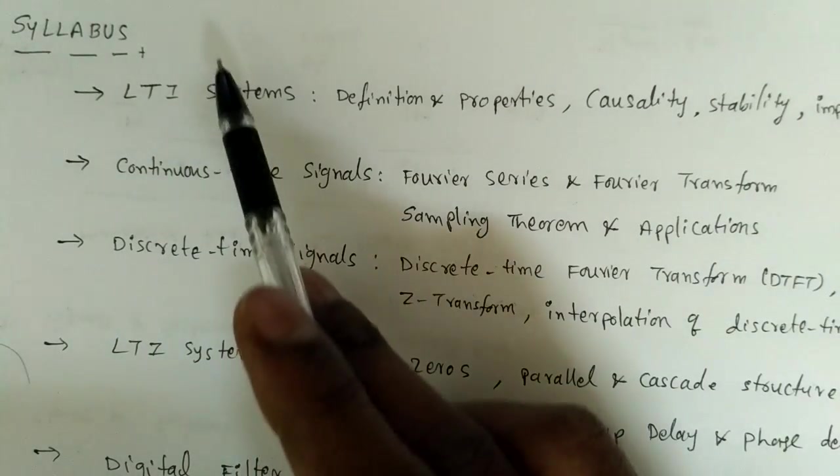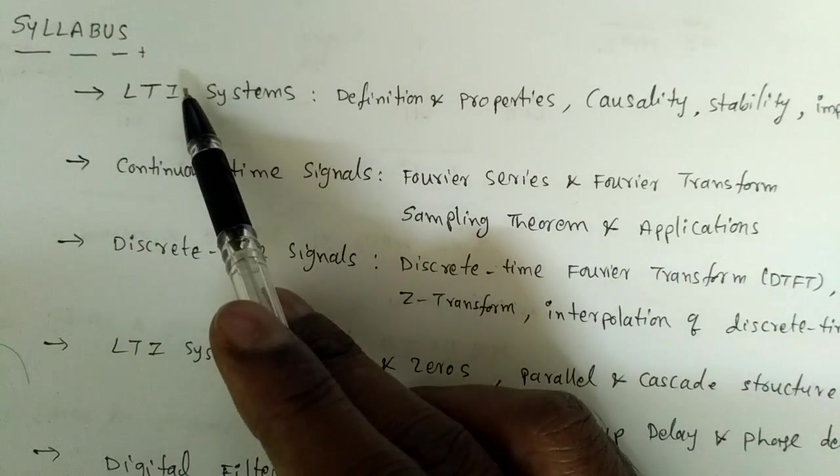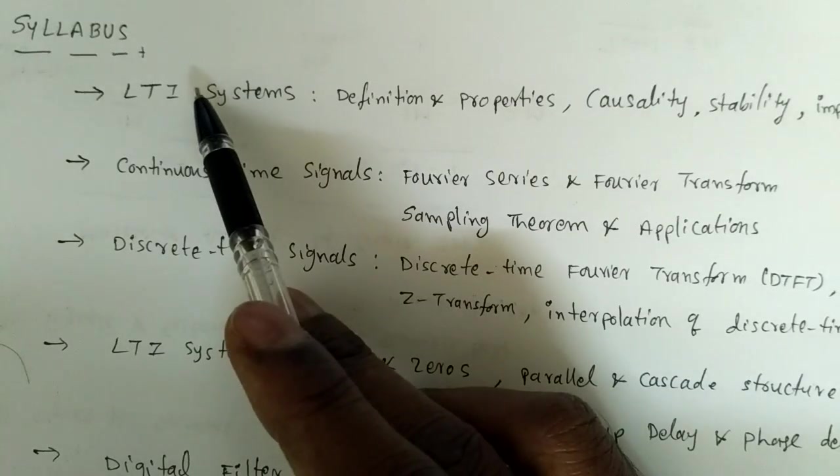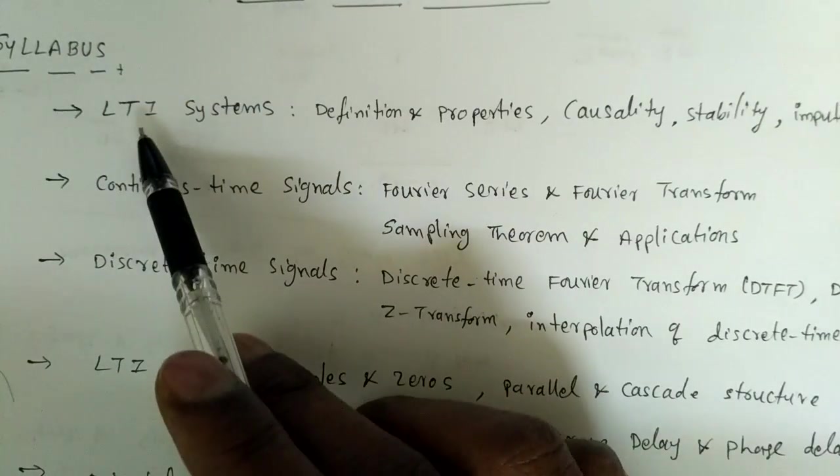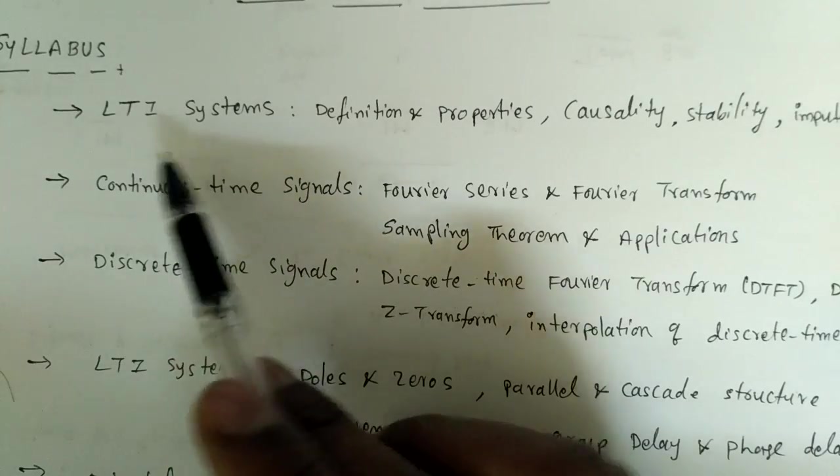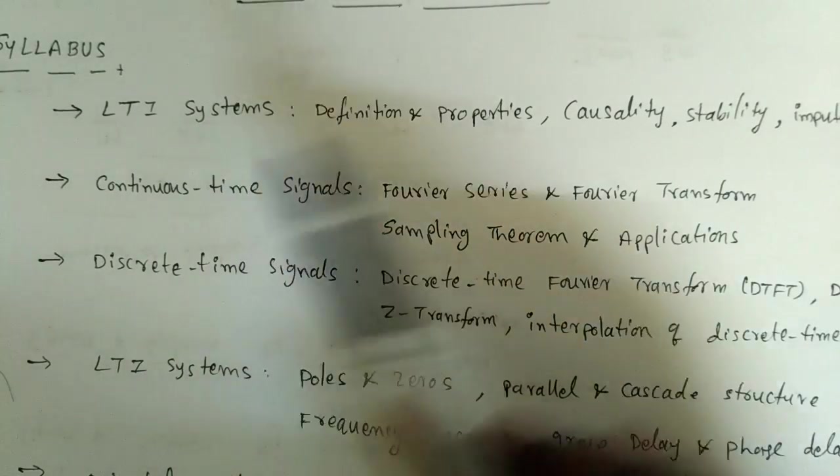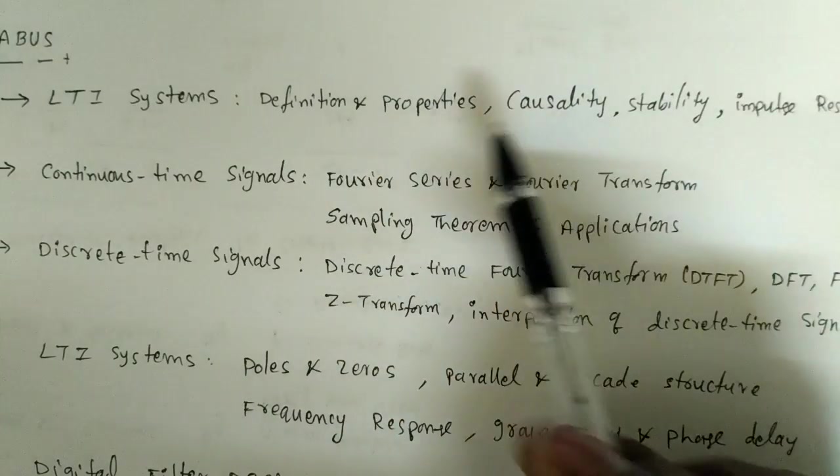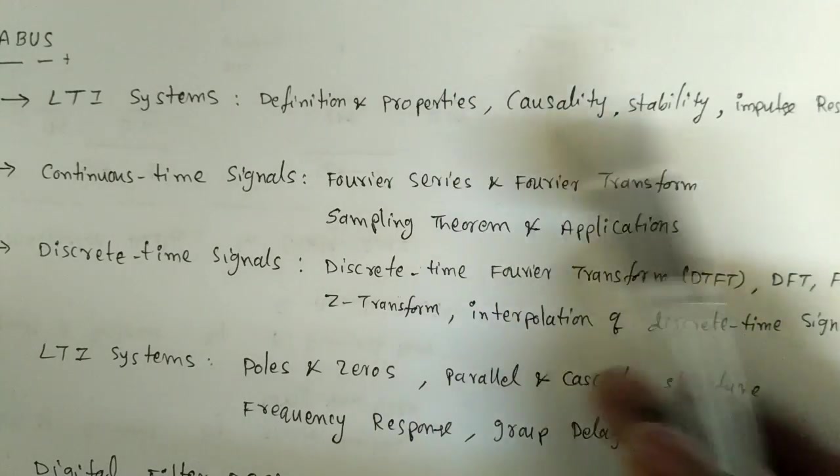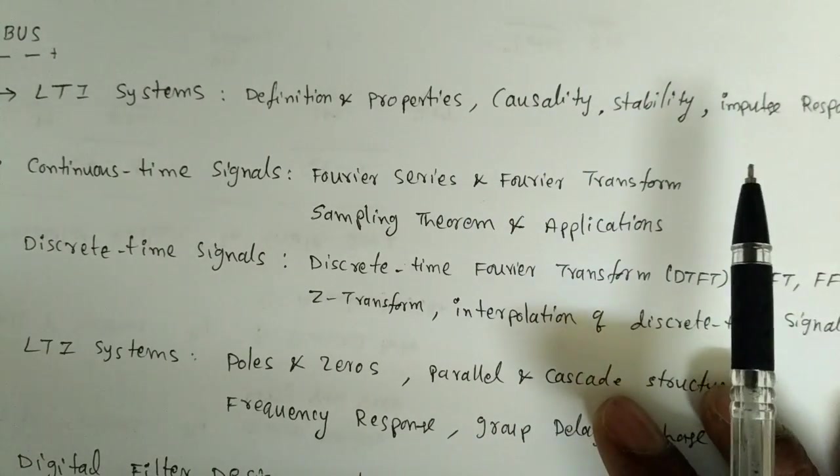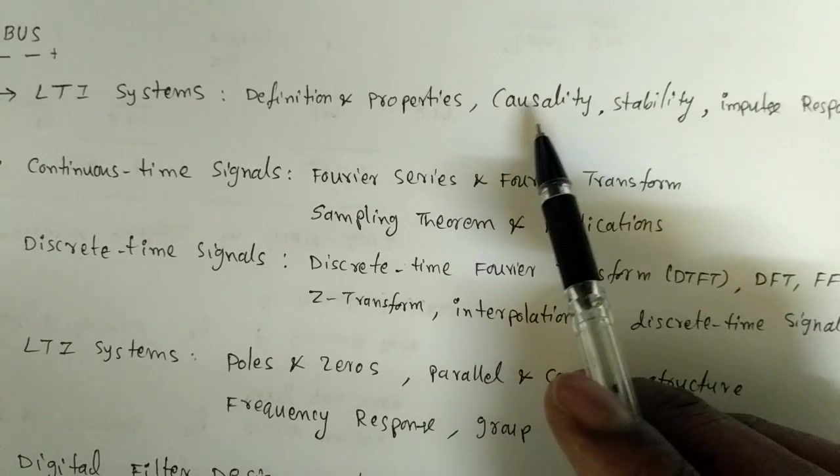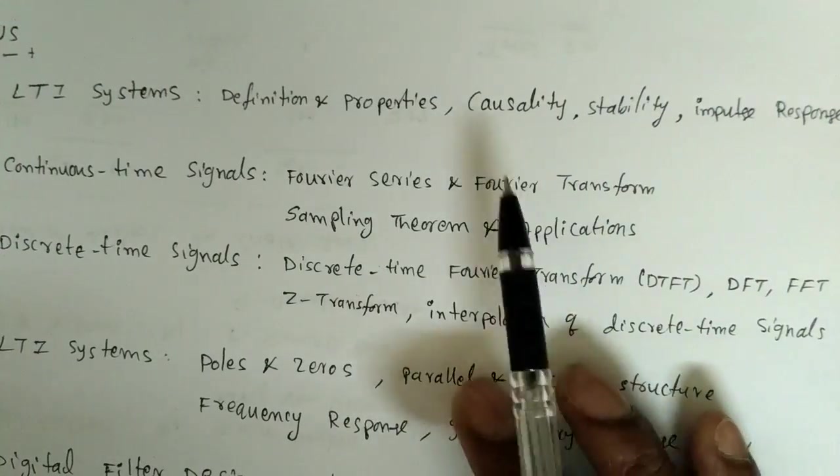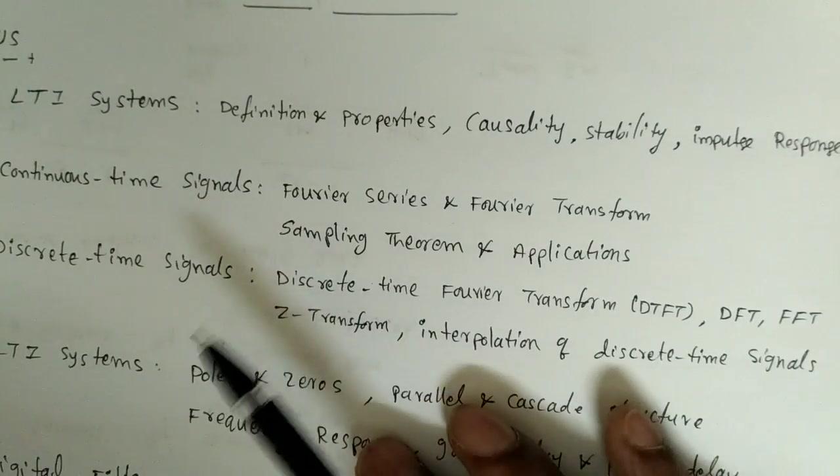Generally we start with the basics like what is a signal, types of signals, etc. But the main concept is LTI systems - linear time invariant systems. That includes definition, properties like causality, stability, time invariant or variant, linear or non-linear, then impulse response and the main one is convolution.